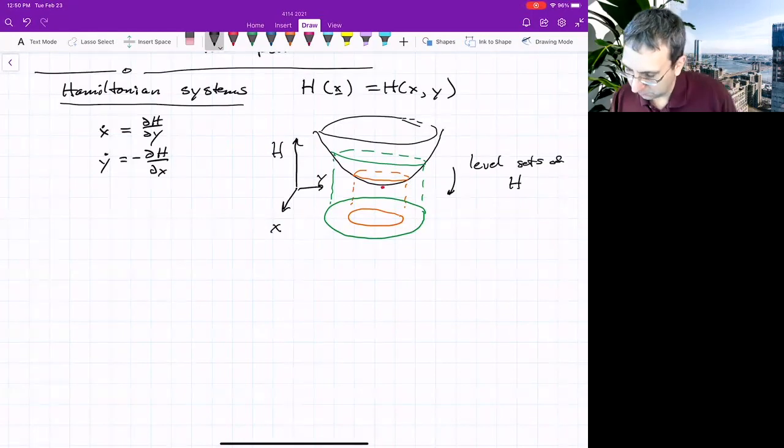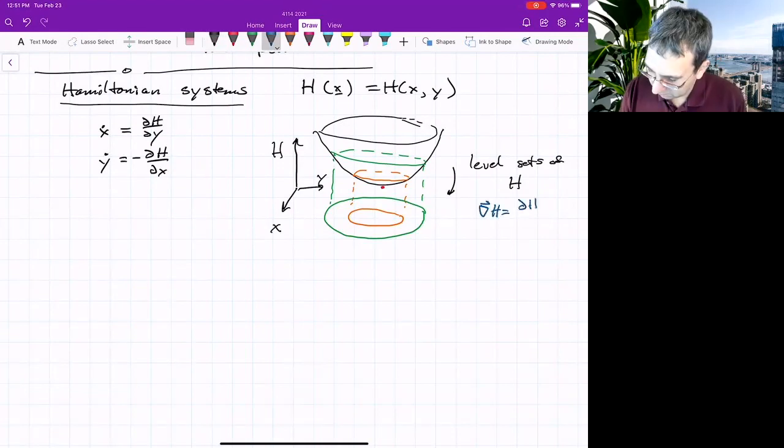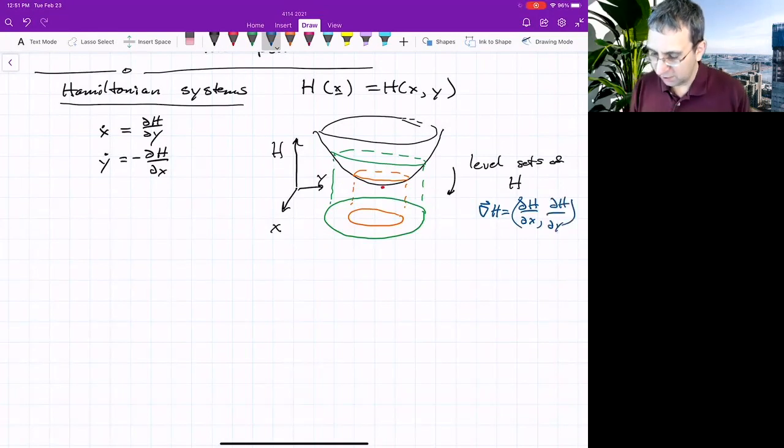What if we were to plot the gradient? The gradient of h has components partial h partial x and partial h partial y. The gradient is always pointing outward, pointing outward of these level sets, maybe less so at the inner one.